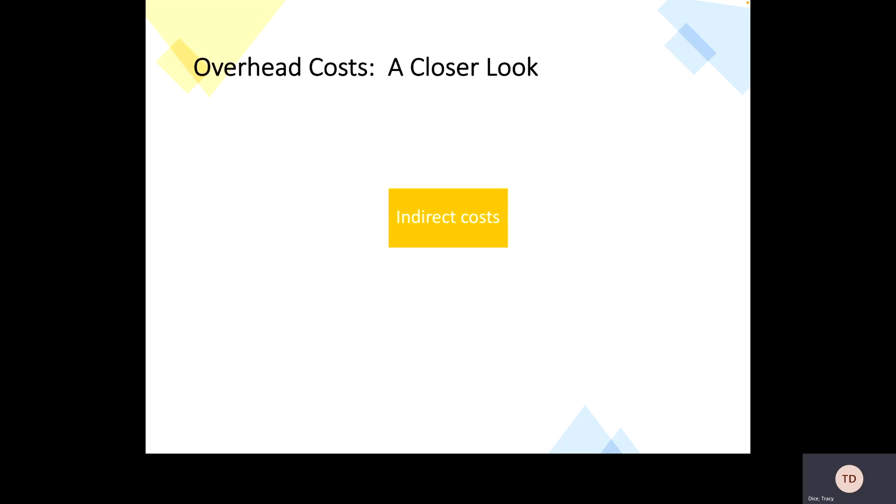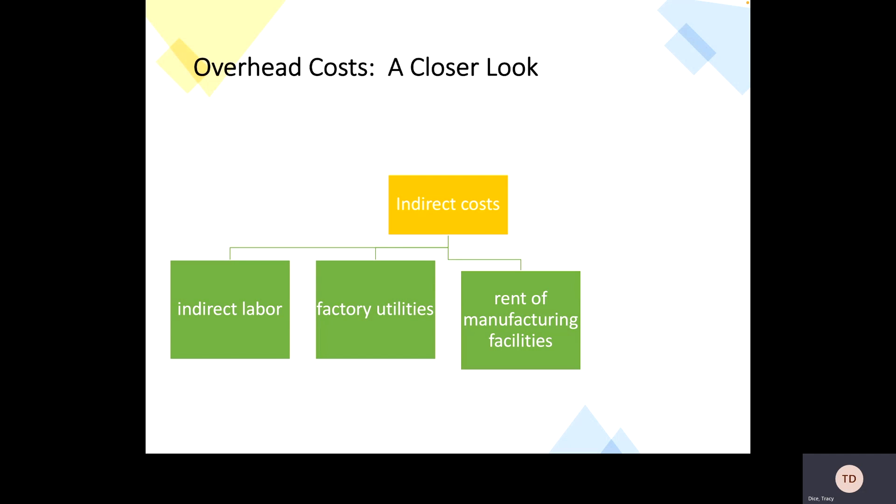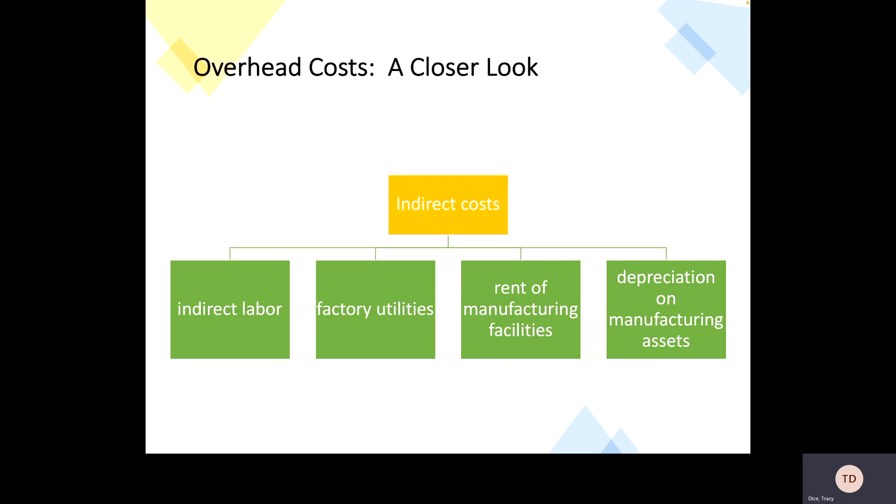So just a quick closer look at your overhead costs. Overhead costs are some sort of costs that cannot be easily traced to your products. So these types of costs could be indirect labor. So looking at maybe security or inspectors or maintenance personnel, anybody that's got to come in and work with it, but it's indirectly tied to it. It might be your factory utilities. It could be the rent of your manufacturing facilities or the rent of your equipment. And then again, the depreciation on those manufacturing assets.